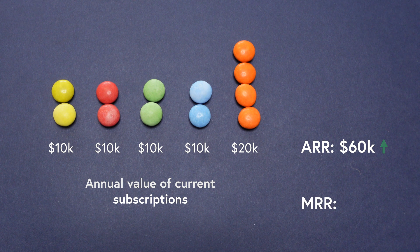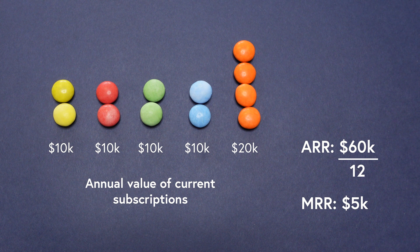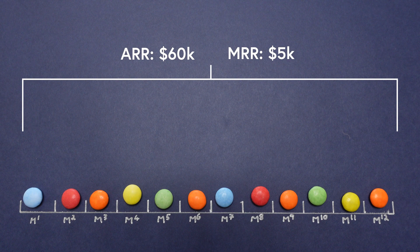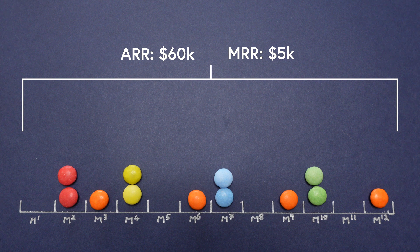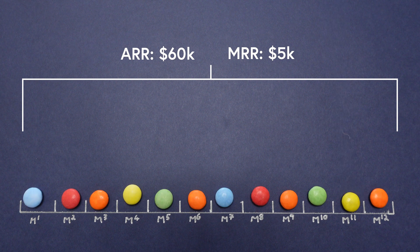To calculate Monthly Recurring Revenue, you divide your Annual Recurring Revenue by 12. This gives you a normalised figure for how much revenue your current subscribers will provide on average each month. By calculating MRR this way, it doesn't matter whether your customers pay monthly, quarterly, or annually — they all show up the same in your MRR because it averages out the subsequent 12-month period.